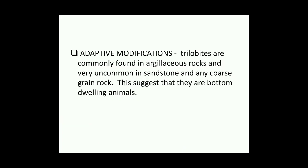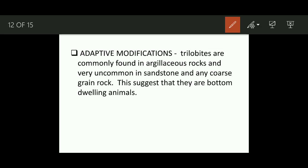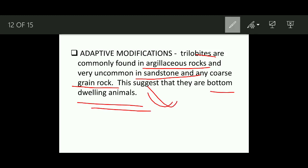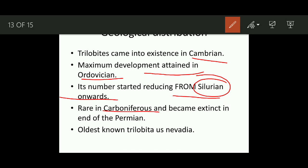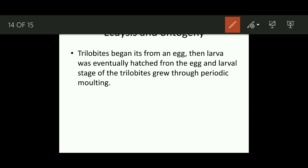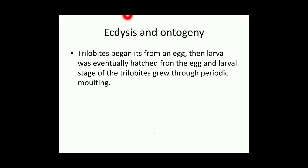Trilobites are commonly found in argillaceous rocks and very uncommon in sandstone and coarse-grained rocks, suggesting they were bottom-dwelling animals. Keep in mind that trilobites came into existence in the Cambrian; maximum development was attained in the Ordovician; numbers started reducing from Silurian time onwards; they became rare in the Carboniferous; and they became extinct in the Permian. The oldest known trilobite is Nevadia.